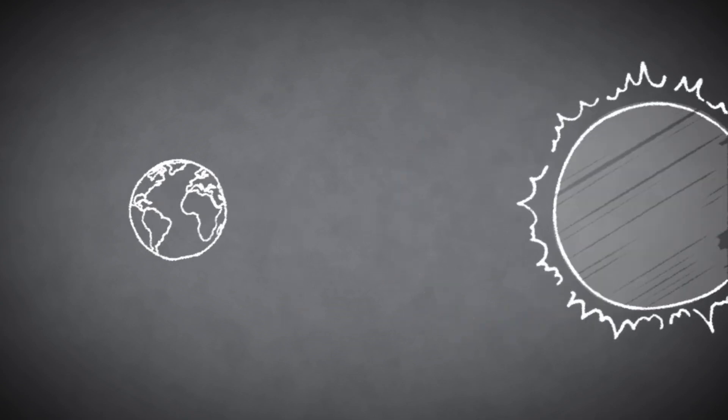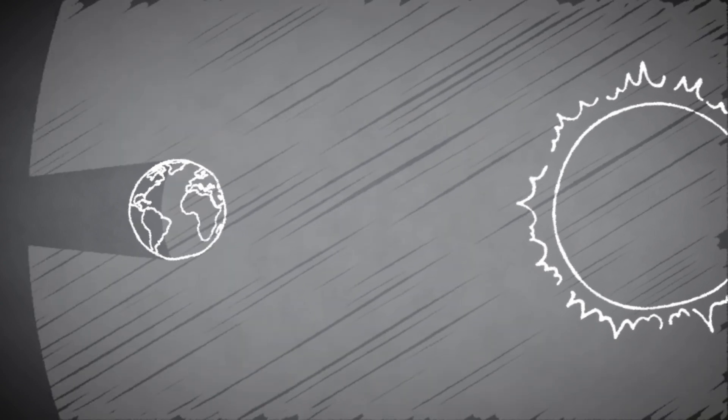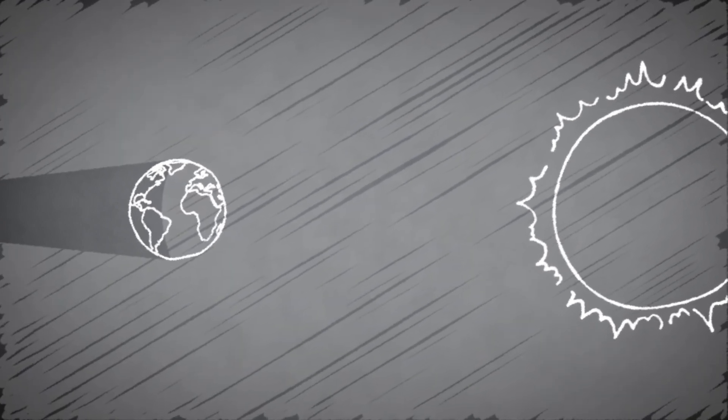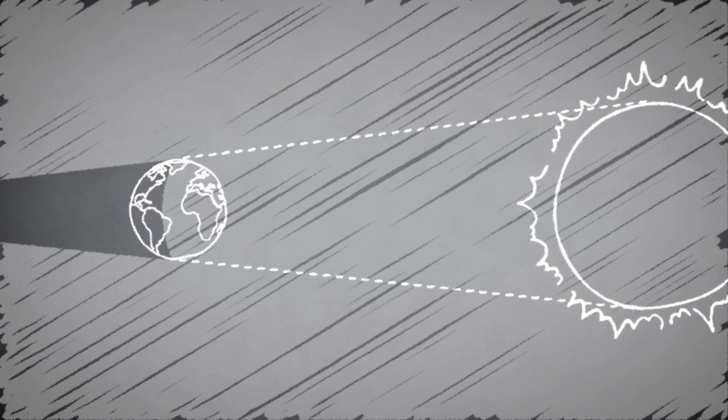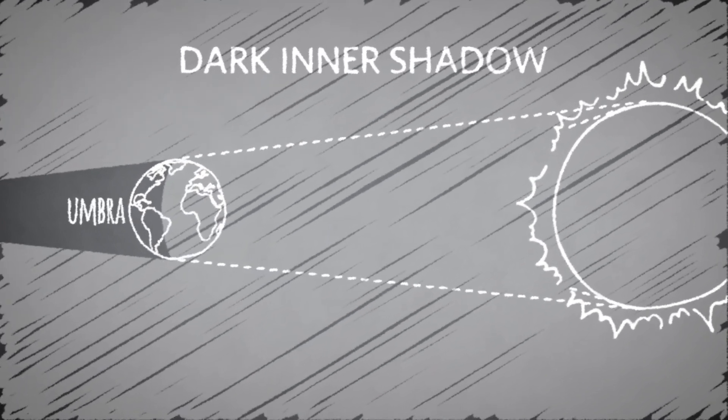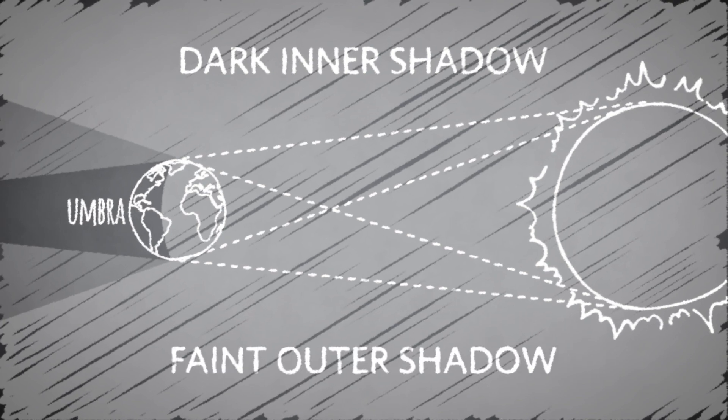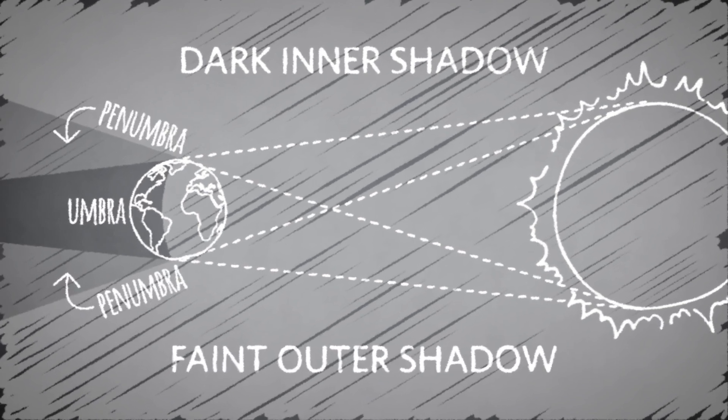That leaves the mostly reddish light to make it all the way through. Because the Sun has a perceptible diameter and is not a point source of light, it doesn't cast a clear, razor-sharp shadow. Instead, the shadow it casts has two parts: a dark inner shadow, or umbra, and the faint outer shadow, or penumbra.